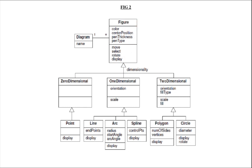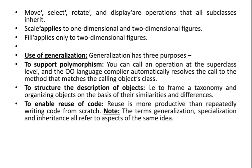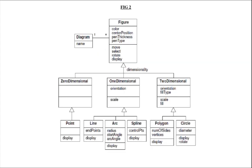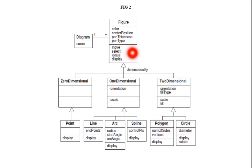This is generalization — I am arranging the classes as superclass and subclasses, and subclasses can inherit the features of the superclass. Move, select, rotate, and display operations are inherited by all subclasses. Rotate is also inherited — for example, circle inherits the rotate operation.